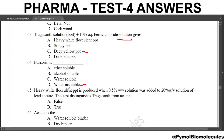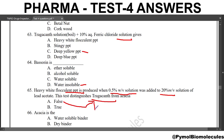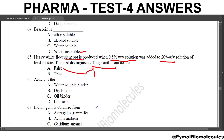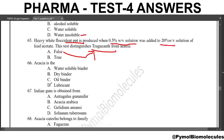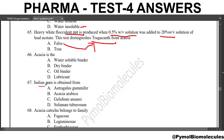Next question: heavy white flocculent precipitate is produced when 0.5% w/v solution is added to 20% w/v solution of lead acetate. This test distinguishes tragacanthin from acacia. The answer is true. This lead acetate test differentiates tragacanthin from acacia. Acacia is a water-soluble binder. Indian gum is a synonym of Acacia arabica.